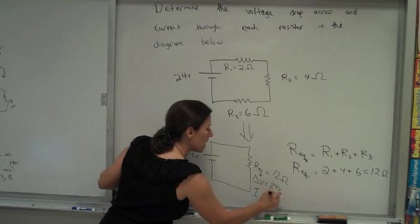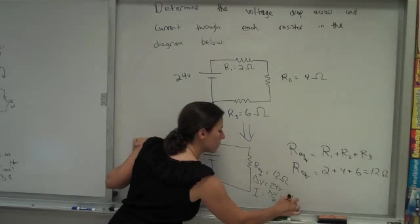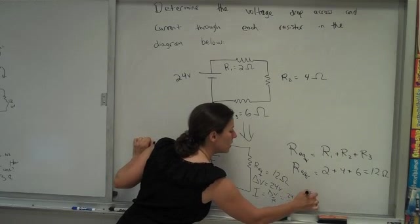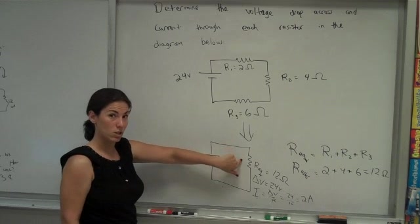The current is the voltage drop divided by the resistance. So 24 over 12, so we're expecting a 2 amp current. So that's how much is in this circuit.